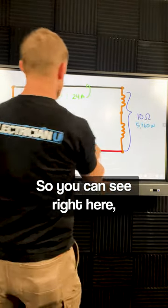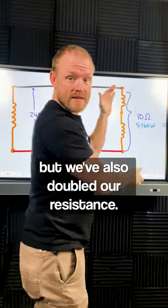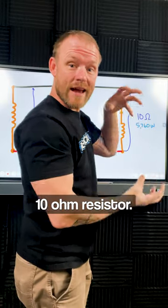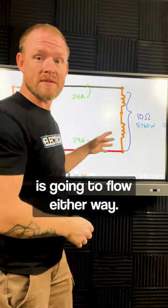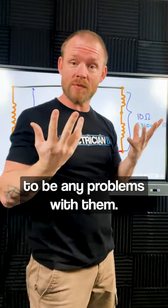So you can see right here, 240 volts. We have doubled our voltage, but we've also doubled our resistance. So instead of two independent 5-ohm resistors, now we have a greater 10-ohm resistor. This is just a normal series circuit. So the same 24 amps is going to flow either way. So the loads are going to still perform just like they should, and there's not going to be any problems with them.